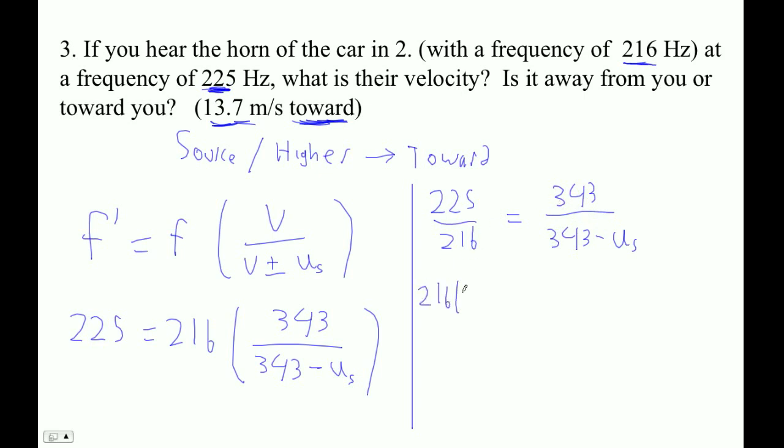So we have 216 times 343 equals 225 times 343 minus 225 times us. Okay, so let's see.